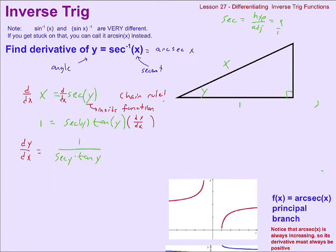We can solve for dy/dx, which was our goal. To get dy/dx by itself, divide both sides by secant(y) times tangent(y). As we saw with logs, we don't want y in the answer, so we'll replace those y's with x's. We can do that because y and x both describe the angle and hypotenuse of this triangle. The secant of y is already known to equal x, so we replace secant(y) with x.